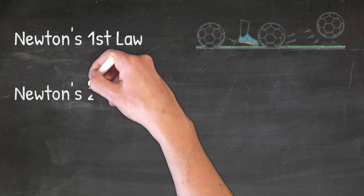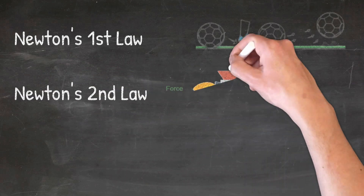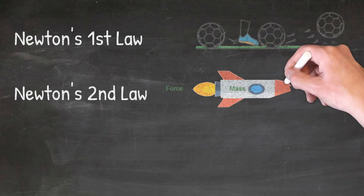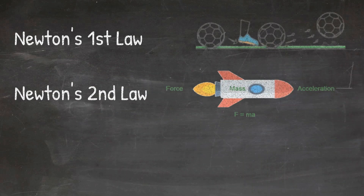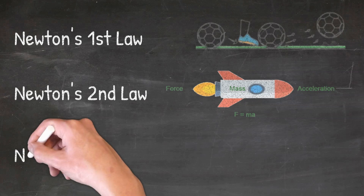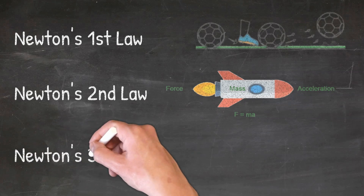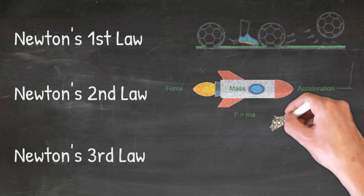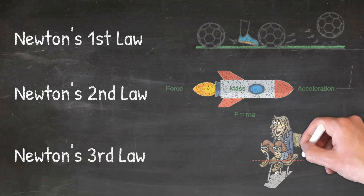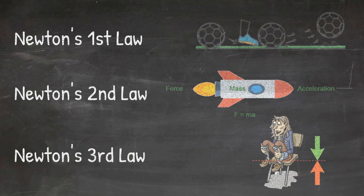Newton's second law of motion states that the force of an object is equal to its mass times its acceleration. And Newton's third law of motion states that for every action, there is an equal and opposite reaction.